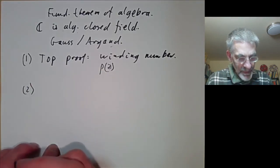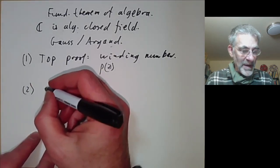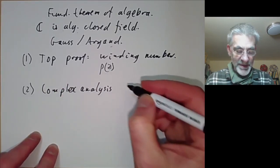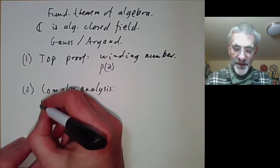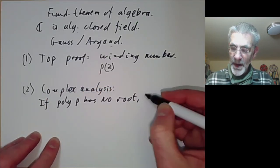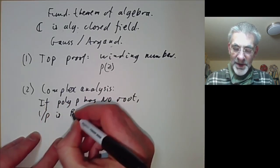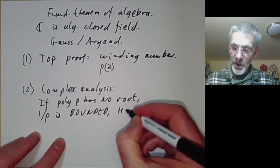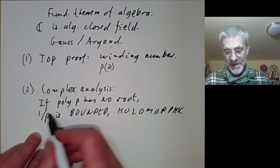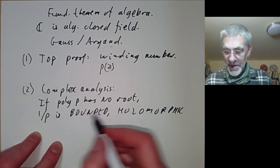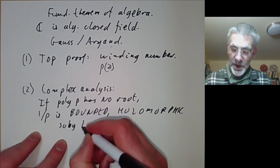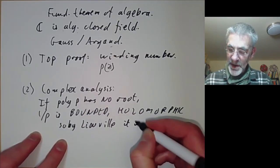A second proof comes from complex analysis which may be almost the simplest proof. It says that if the polynomial p has no root then 1 over p is bounded and holomorphic. Since it's got no roots it doesn't have any poles and it's easy to check it's bounded by looking at what happens for large values of z. So by Liouville's theorem it is constant.